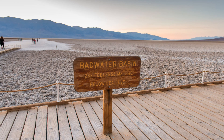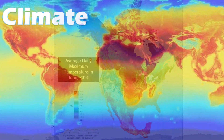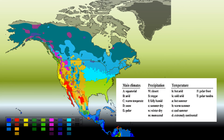Badwater Basin in Death Valley National Park is the lowest point in North America at 86 meters below sea level. The climate of North America varies from extreme cold to scorching hot. A temperature map shows the average daily maximum temperature recorded in June, and the Köppen climate classification shows how the climate changes throughout the continent — it is not as simple as the further away from the North Pole you go, the warmer it gets.